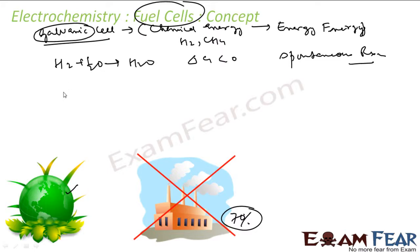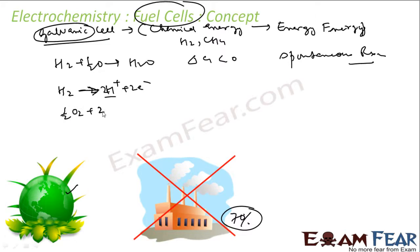If you see internally what happens: hydrogen will lose electrons, or becomes H+, and gives two electrons. That is how it happens — hydrogen becomes H+. Oxygen, if you take half oxygen, it takes two electrons and becomes O2−. And this H+ and O2− react to form water.